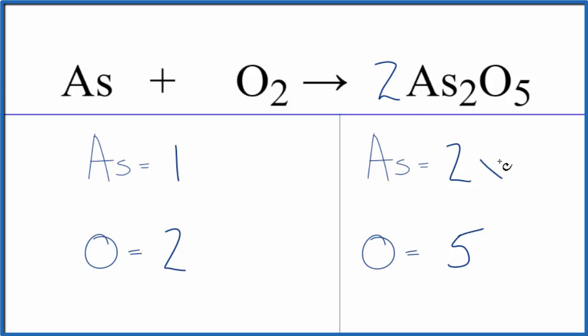So two times two, that'll give us four arsenic atoms. Five times two, that'll give us ten oxygen atoms. But now we can just put a five in front of the O2. Two times five, that gives us ten. That balances the oxygens.